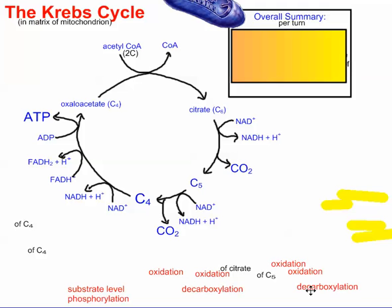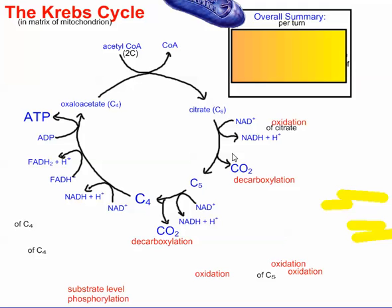So in red here, I just have names of some of these things. So obviously when you lose a carbon, it's called decarboxylation. So we'll call that decarboxylation. I lose another carbon over here from five to four. So we'll call that a decarboxylation. This is another oxidation reaction over here. It's oxidation of citrate though, of citrate. And here's another oxidation reaction. But that's oxidation of this C5 molecule.